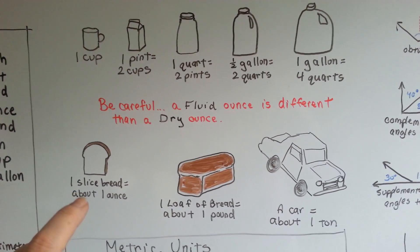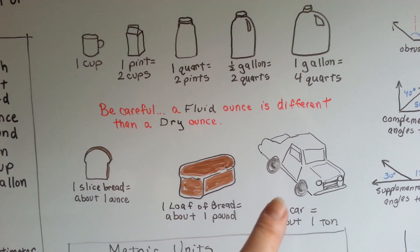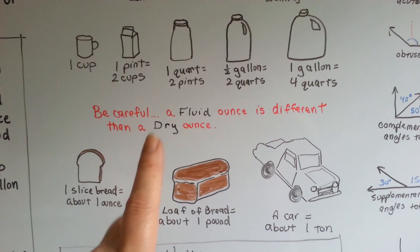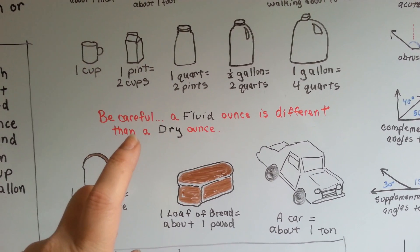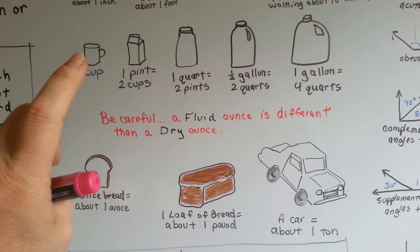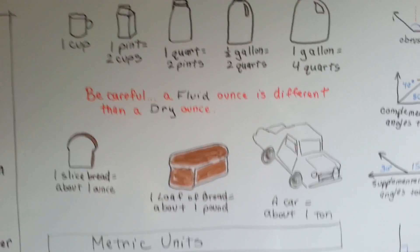A slice of bread is about an ounce, a loaf of bread is about one pound, and a car weighs about a ton. But you have to be careful because a fluid ounce weighs different than a dry ounce. You can have ounces of milk and ounces of bread and they would be different.